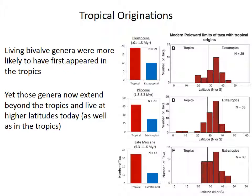But this other data suggests it's actually a little more complicated than that. Even though many of these taxa did first appear in the tropics, a lot of them now live both in the tropics and at higher latitudes. That's shown in the histograms on the right, which show the greatest poleward latitude of the genera that originated in each of our three time periods. For example, of the 25 genera that first appeared in the Pleistocene, only five still occur just in the tropics. The other 20 have ranges that extend from the tropics to regions outside of there, with one ranging as far as 45 degrees north or south.